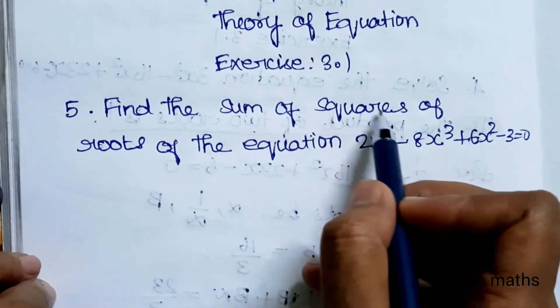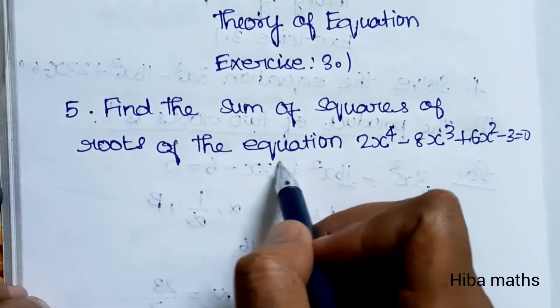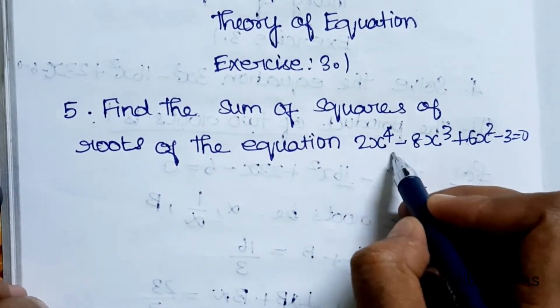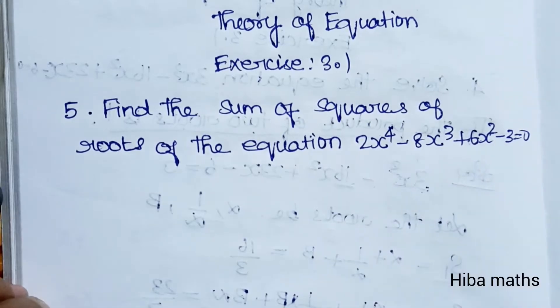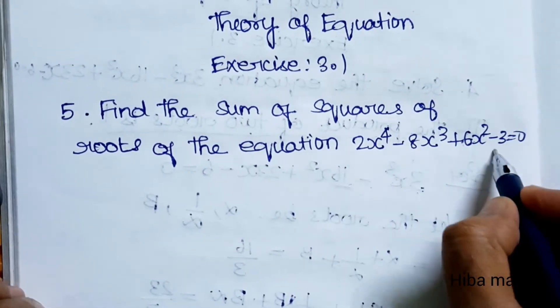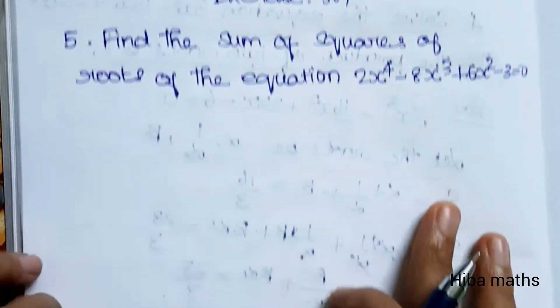Find the sum of squares of roots of the equation: 2x power 4 minus 8x cube plus 6x square minus 3 equal to 0.